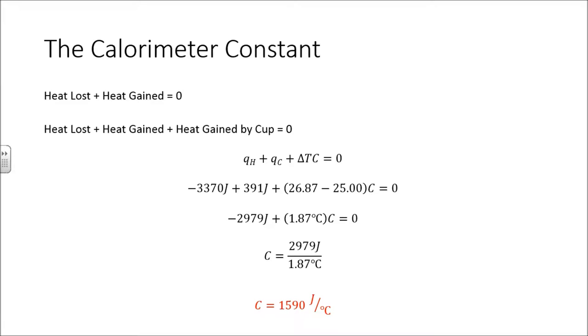That means that for every degree Celsius change that we see in this cup, the cup will have absorbed 1590 joules. That's what the calorimeter constant does for us. Let's put it to use.